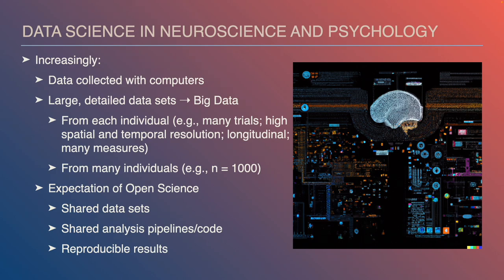In neuroscience and psychology, data science is increasingly important because almost exclusively data is collected with computers, or at least entered into a digital format. We're seeing more large detailed datasets — big data — meaning from each individual we might have many trials, high spatial and temporal resolutions from EEG or fMRI scanners, longitudinal data, neuroimaging combined with genetic, behavioral, and demographic data, and data from hundreds or thousands of individuals across multiple sites. This explosion in data necessitates tools that enable us to work with it effectively and gain insights.